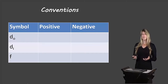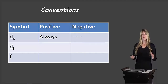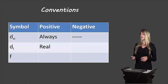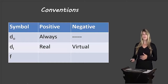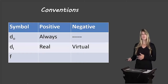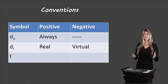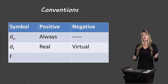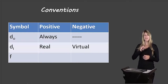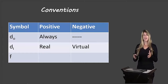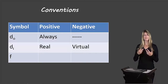For DO, the object distance, it will always be positive — every time you write a number for DO into your equation, it will always be positive. DI is a positive number when the image is real, and a negative number when the image is virtual. So if we measure the image distance to be 5 centimeters but it's a virtual image, we would write negative 5 into our equation, so that we know we are dealing with a virtual image.